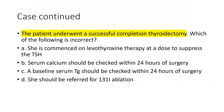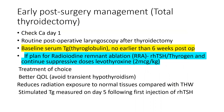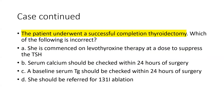The patient underwent a successful completion thyroidectomy. Which of the following is incorrect? Should she be commenced on levothyroxine at a dose to suppress TSH? Serum calcium should be checked within 24 hours of surgery. Baseline serum thyroglobulin should be checked within 24 hours of surgery. In the early post-operative management after total thyroidectomy: check calcium on day one — that is correct. Routine post-operative laryngoscopy after thyroidectomy. Baseline serum thyroglobulin no earlier than six weeks post-op. So the incorrect statement is checking thyroglobulin within 24 hours — that is statement C.